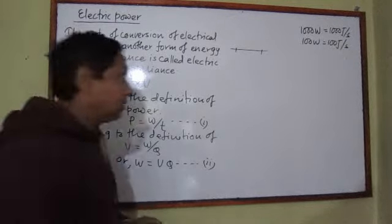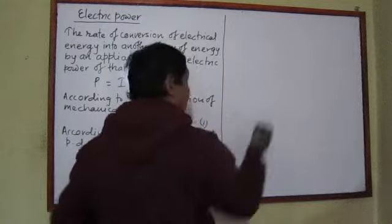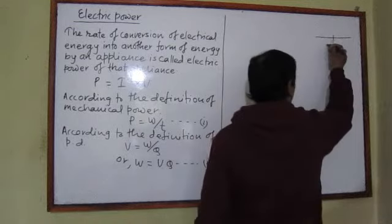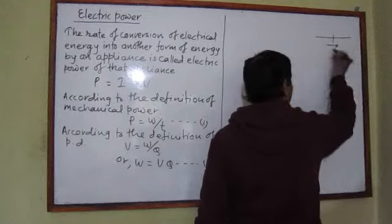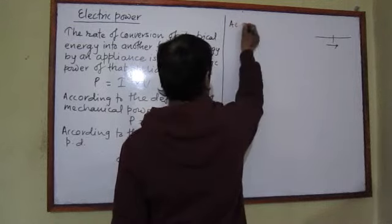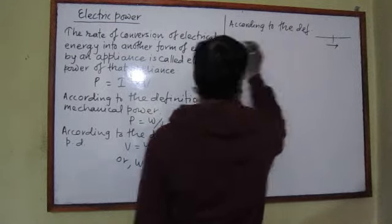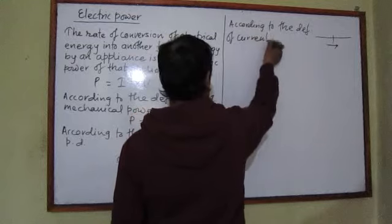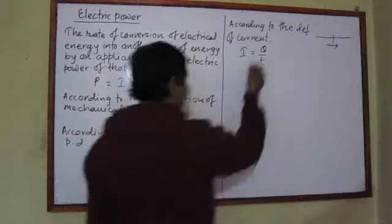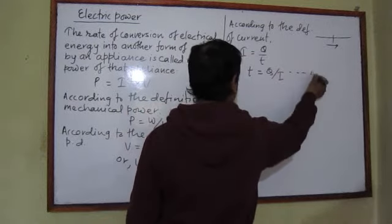Now I want to replace T with some other values. We know that the rate of flow of charge is current. If current is flowing in a conductor wire, then from the cross section of this conductor wire we can see how much electric charge crosses in every one second — that represents the flow of current. According to the definition of current, current I equals charge Q divided by time T, so T equals Q divided by I. This can be recognized as equation three.